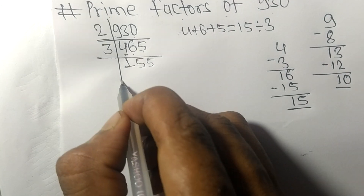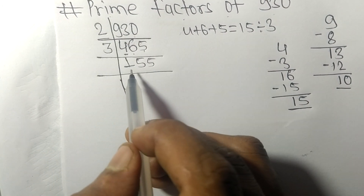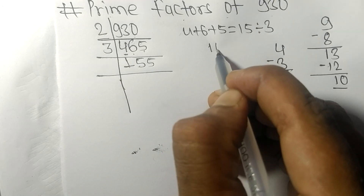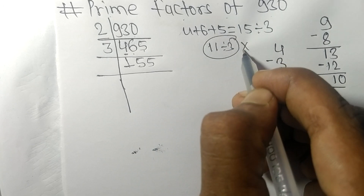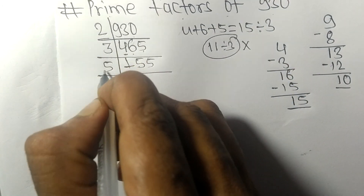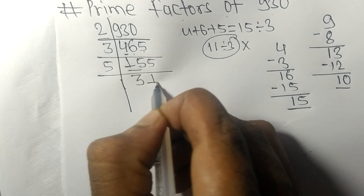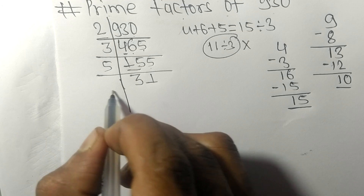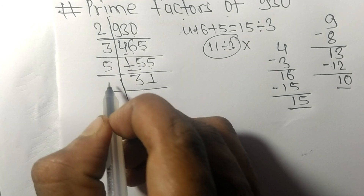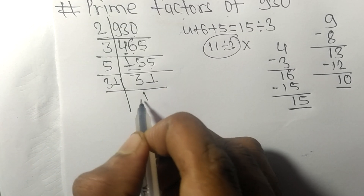3 times 5 is 15, so now we get 155. Its digit sum is 1 plus 5 plus 5 equals 11, and 11 is not exactly divisible by 3. So now we check divisibility by 5. 5 times 3 is 15, 5 times 1 is 5, so now we get 31, which is exactly divisible by 31 only.